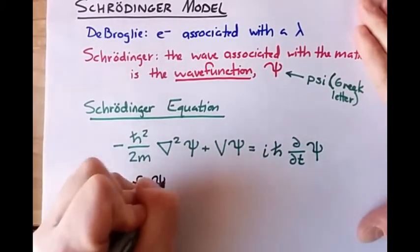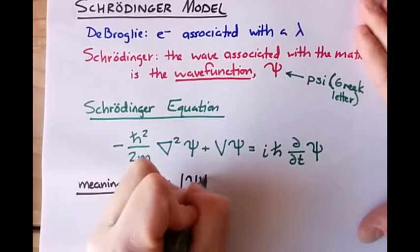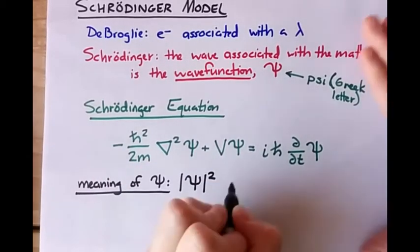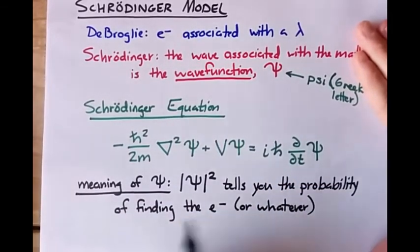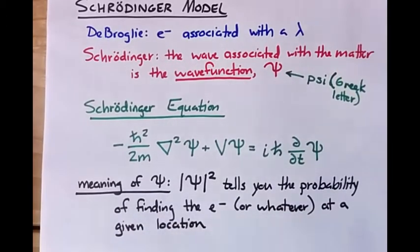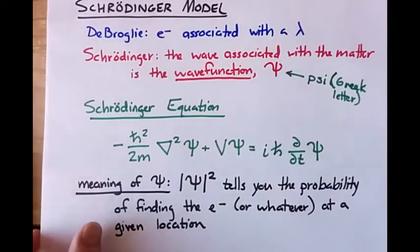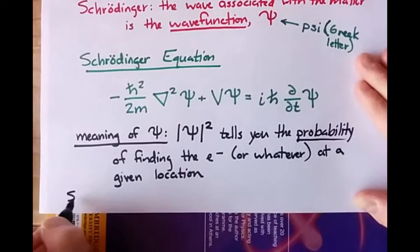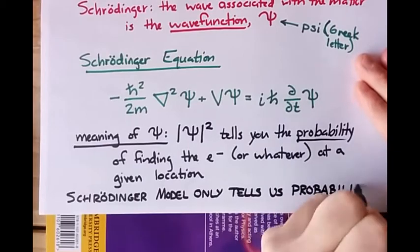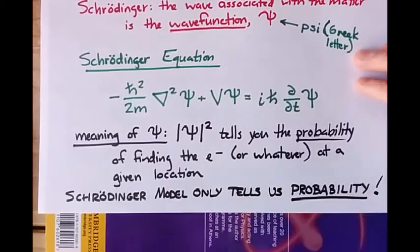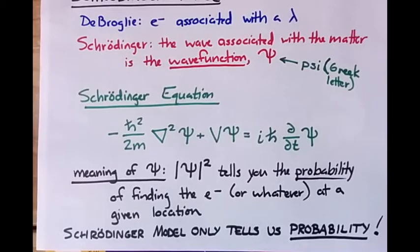The meaning of the wave function: if you solve for it, the absolute value of the wave function squared tells you the probability of finding the electron at a given location. So if you solve for the wave function, take the absolute value and square it, that'll tell you the probability of finding the electron at a given location. The Schrödinger model only tells us the probability of finding an electron at a given location — it does not tell us exactly where the electron is.